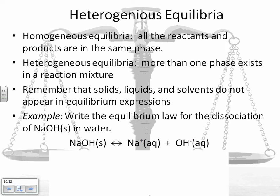All right. Heterogeneous equilibria. Homogeneous equilibria is when all the reactants and products are in the same phase. So they're all aqueous, or they're all gases, or they're all in the same phase. In a heterogeneous equilibrium, there's more than one phase in the reaction mixture. So we have to take that into account when we do these equilibrium expressions. Remember what I said. Solids, liquids, and solvents, and solvents are usually in the form of a liquid, do not appear in the equilibrium expressions.